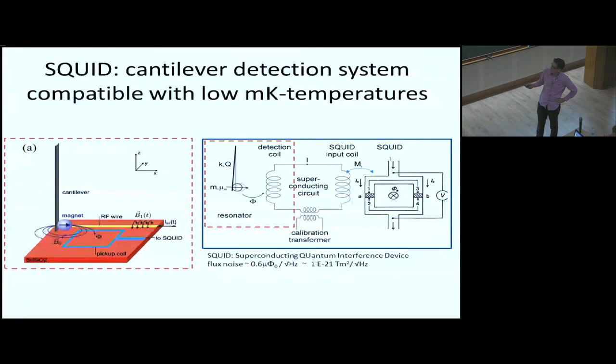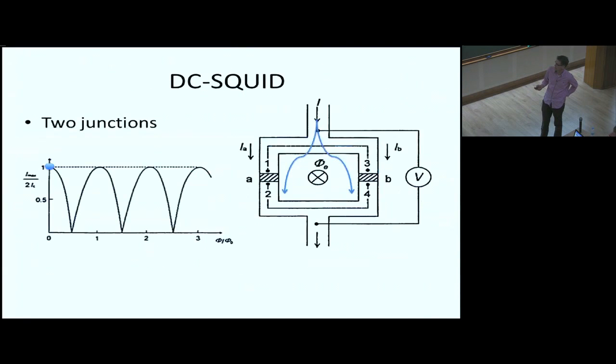What we do in Leiden is we use a squid, which is a superconductor that has two weak links in it. And then the magnet is oscillating over a pickup coil. So if the magnet moves, the flux here changes. Because it's a superconductor, the flux is preserved. So then there's flux also here to compensate this flux. And this flux then enters the squid. And the squid is the most sensitive device to measure flux. And that's what we use all the time.